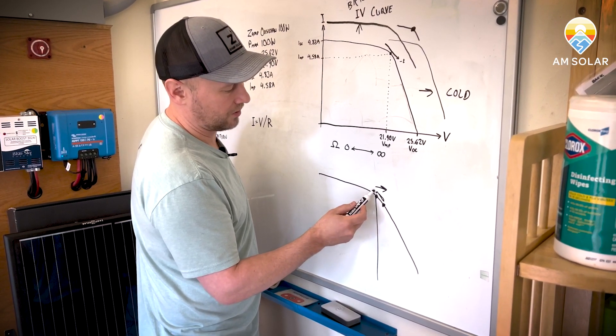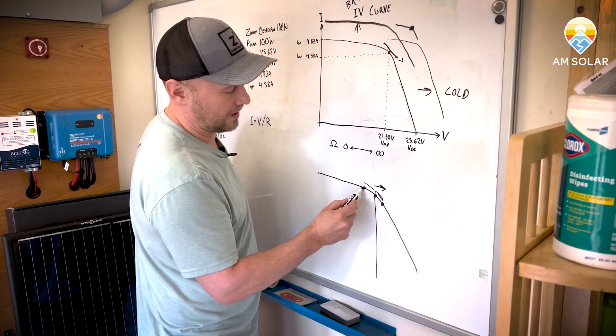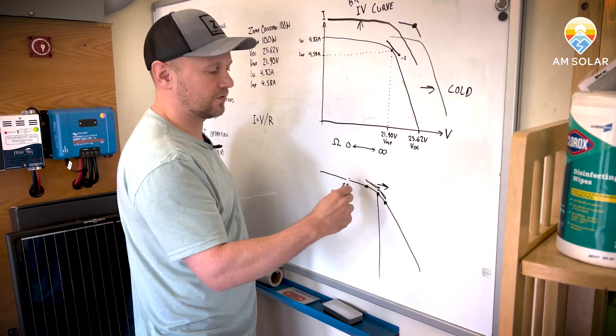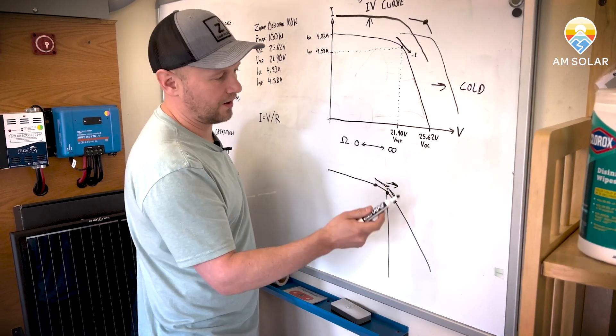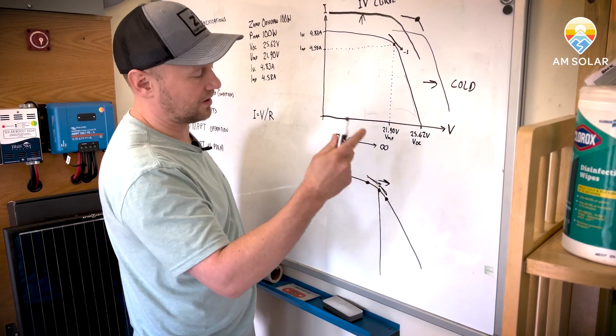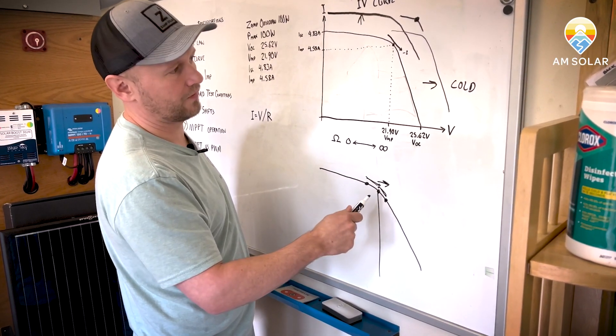And then maybe another duration of time later, it'll go this way and pick a point here. Did I get more power? Nope. I'll go back here. And it just repeats that process, just bouncing around back and forth continuously to find the optimal place that's constantly shifting to draw power from the panel.